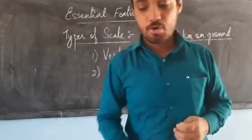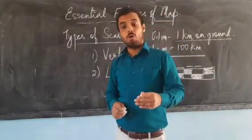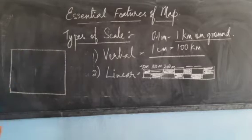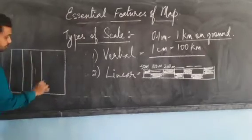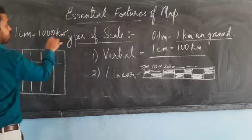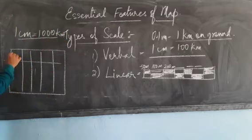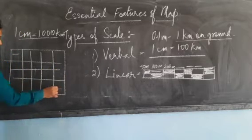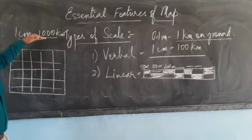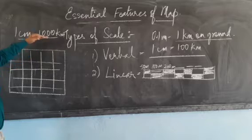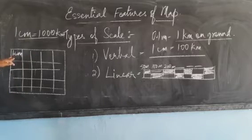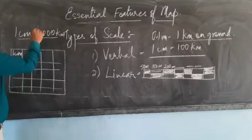I am going to draw a diagram so that you can understand what a scale is. Suppose my map is made on a paper — this is my paper — and the scale given to us is one centimeter equals one thousand kilometers. So each box on the paper is one centimeter, and it is covering one thousand kilometers.